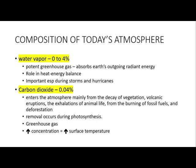Carbon dioxide, at 0.04%, enters the atmosphere mainly from the decay of vegetation, volcanic eruptions, exhalations of animal life, and from the burning of fossil fuels and deforestation. Its removal is through the process of photosynthesis, where plants take in carbon dioxide and release oxygen. It's also a potent greenhouse gas, and as its concentration increases, the surface temperature of the Earth also increases.